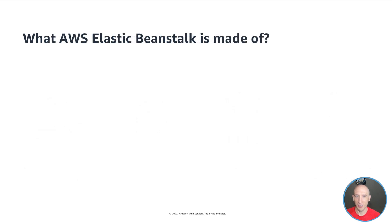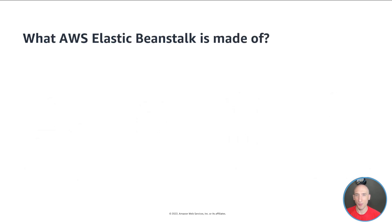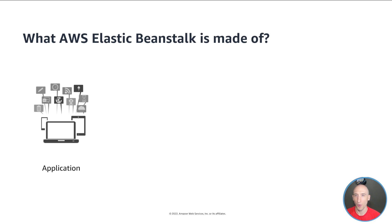So, what is AWS Elastic Beanstalk actually made out of? I like to think of there being four pieces or components for Elastic Beanstalk. The first one being application. An Elastic Beanstalk application is a logical collection of Elastic Beanstalk components, including environments, versions, and environment configurations. In Elastic Beanstalk, an application is conceptually similar to a folder.